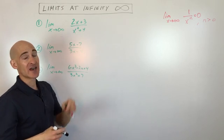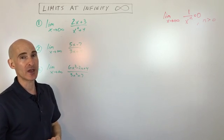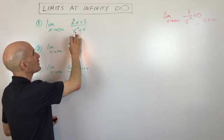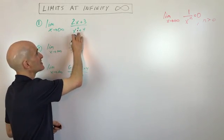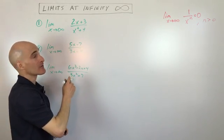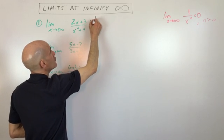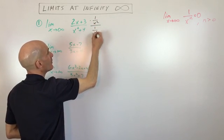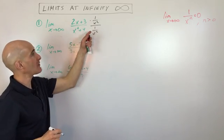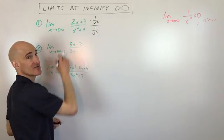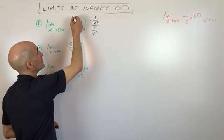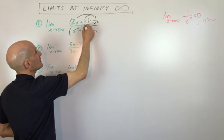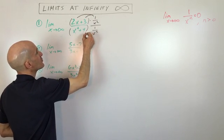Now what I'm showing you is an intuitive way of doing the problem. A more rigorous way is to look at whatever the highest degree term is — in this case, x squared — and multiply the numerator and the denominator by 1 over x squared. Anything divided by itself is 1, so it's not going to change the value of this fraction. Then we distribute to the numerator and denominator.